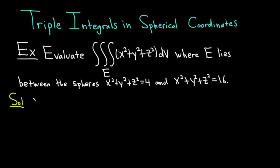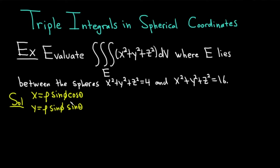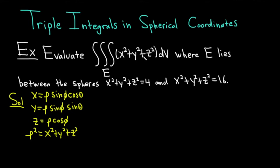First, recall the formulas for spherical coordinates. The first one says that x is equal to rho sine phi cosine theta, and y is equal to rho sine phi sine theta. Notice that they both have the rho sine phi, which makes it a little bit easier to memorize. And z is equal to rho cosine phi.